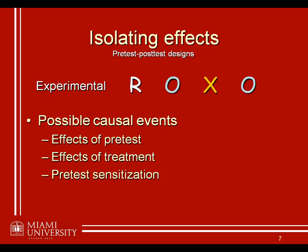We want to know how much of possible improvement on the post-test — the reaction time on the river problem — is due to each of these different effects, and in particular how much is due to the treatment in which we're interested. The solution for determining how much of the performance is due to each of these different effects is what's referred to as a Solomon design, or Solomon four-group design.